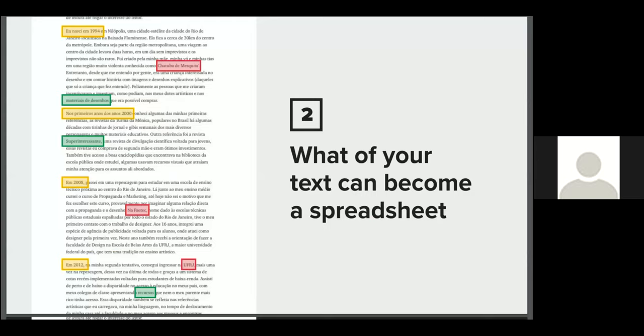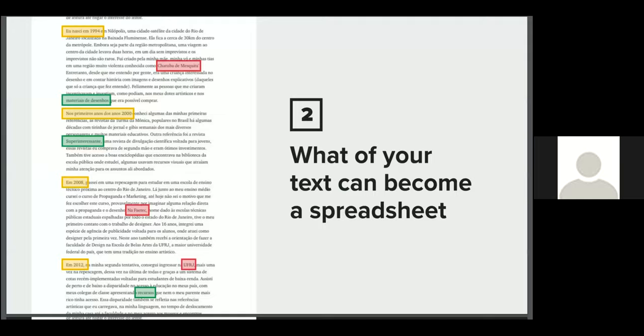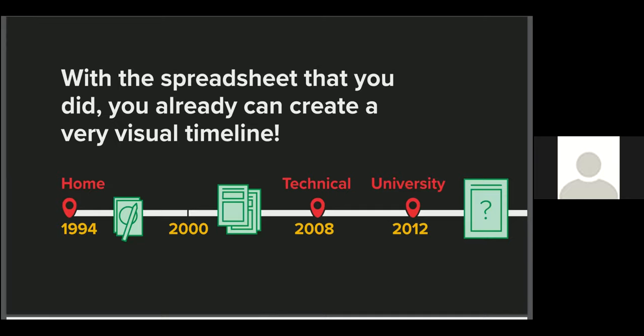The question is what's your text you can turn in a spreadsheet and here you can get dates, places, objects and whatever you want and you can turn maybe a visual timeline with more potential to get people's attention.